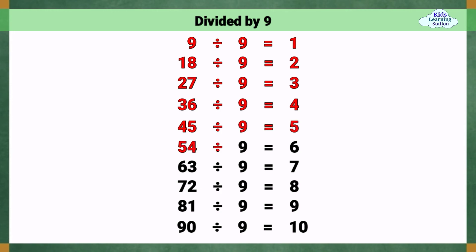54 divided by 9 equals 6. 63 divided by 9 equals 7. 72 divided by 9 equals 8. 81 divided by 9 equals 9. 90 divided by 9 equals 10.